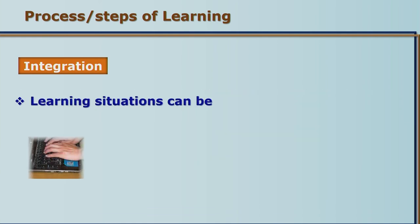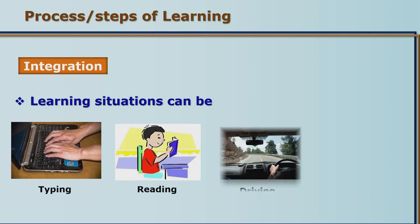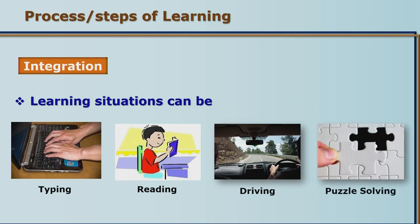These different behaviors can be picked up in different situations. One can learn certain things through computers, another may read several books and pick up certain responses, another may pick up things from nature, and another may solve riddles. Different kinds of situations help us develop different responses which, toward the end, are integrated and used to respond to a particular situation in order to overcome the barriers and reach the goal.